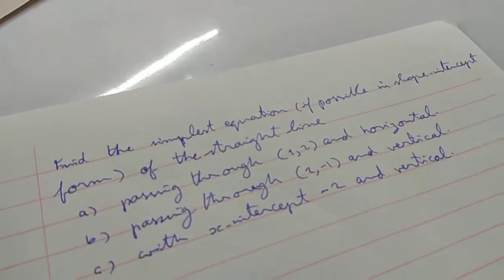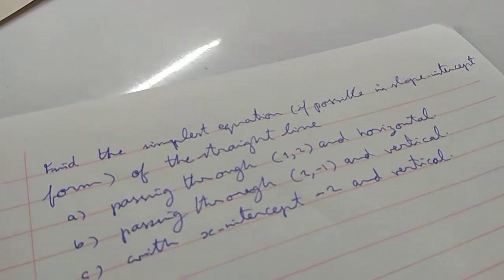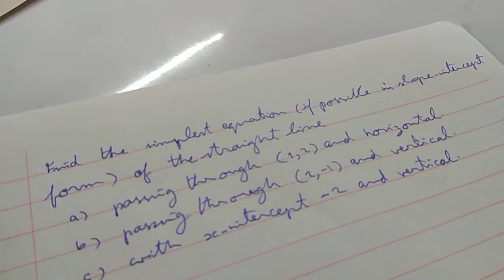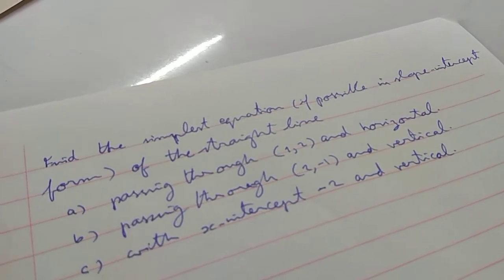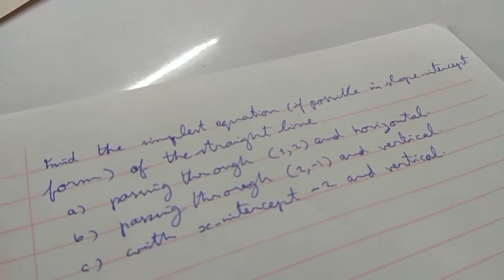Find the simplest equation, if possible, in slope-intercept form of the straight line A, passing through (1,2) and horizontal.